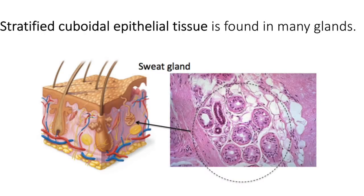Stratified cuboidal epithelial tissue is two layers of those cube-shaped cells. You find this tissue forming many glands in your body — sweat glands, mammary glands, salivary glands. These cells are actively secreting and, of course, protecting. The overarching theme of epithelial tissue is certainly protection.